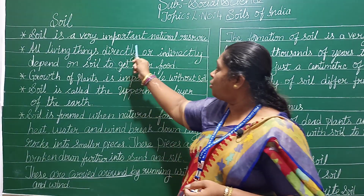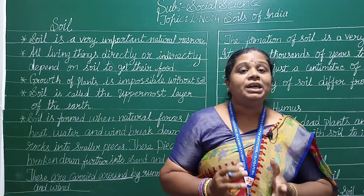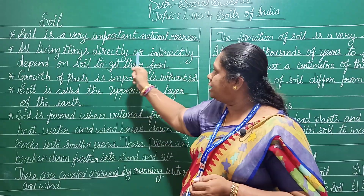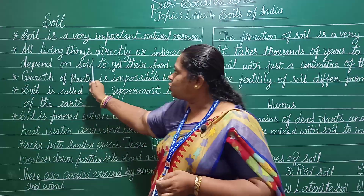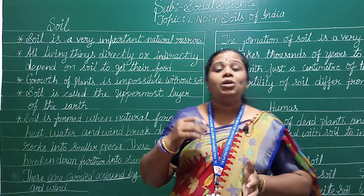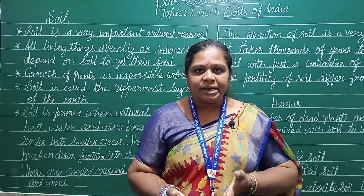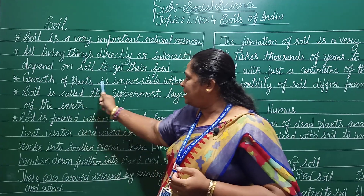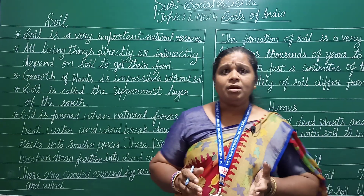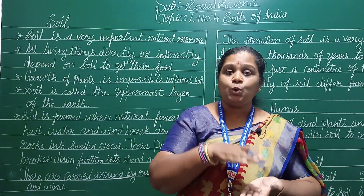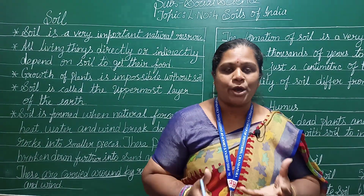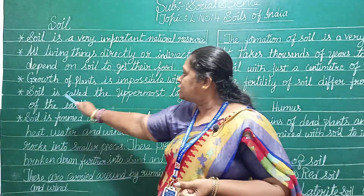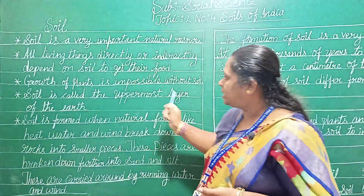Soil is a very important natural resource. All living things directly or indirectly depend on soil to get their food. Growth of plants is impossible without soil — plants grow on the earth with the help of soil. Without soil, plants are not able to grow. Soil is called the uppermost layer of the earth.